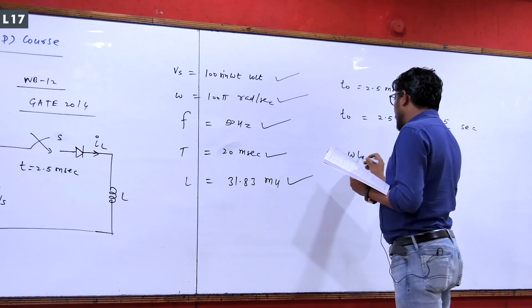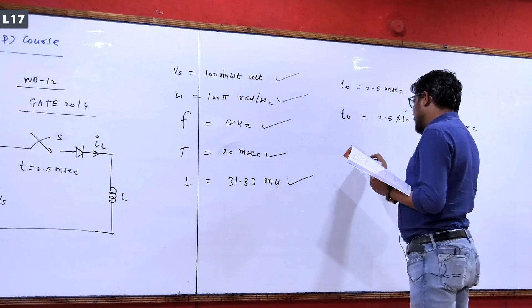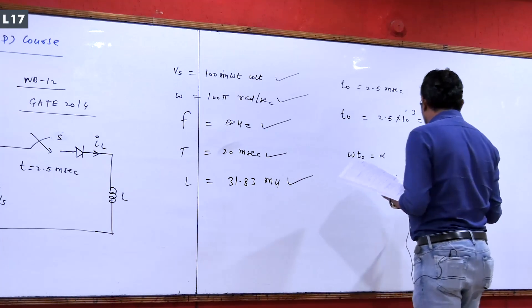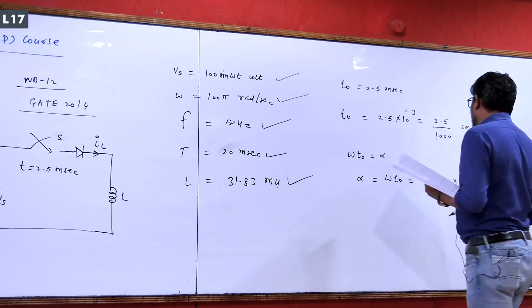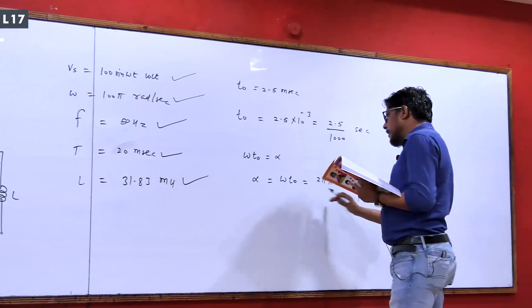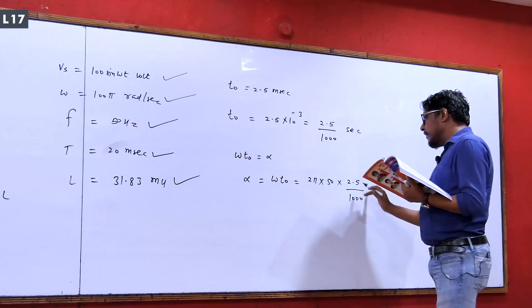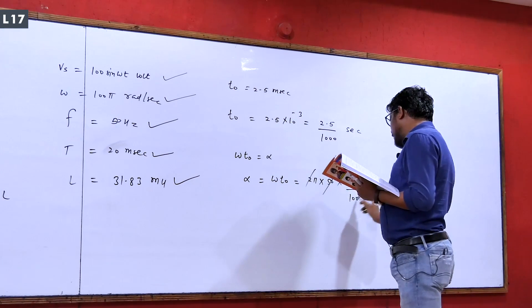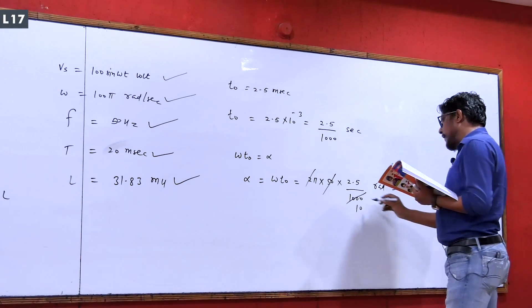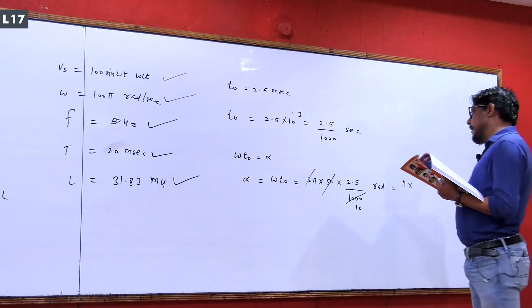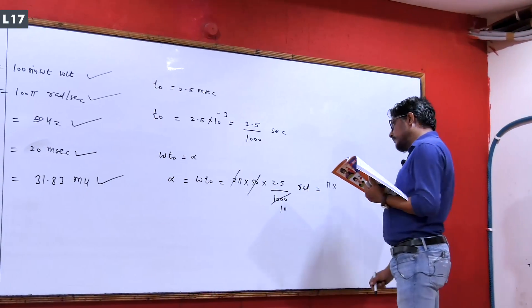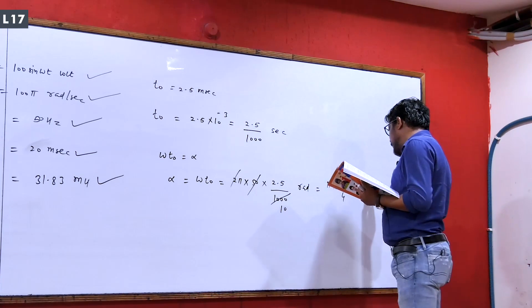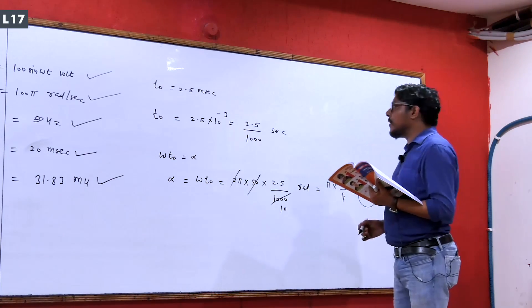So if I say the omega-t value — the radian value — of omega-t naught, that means alpha, the place where the switch closes. Alpha equals omega times t-naught. Omega value equals 2πf, f equals 50, and t-naught equals 2.5 upon 1000. Seconds cancel out, leaving radians. This becomes 2π times 50 times 2.5 upon 1000 — the 100 cancels — giving 2.5 upon 10 equals 1 upon 4, so pi by 4, which means alpha equals 45 degrees.